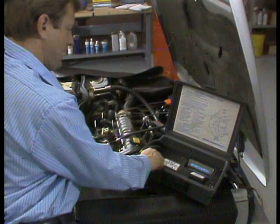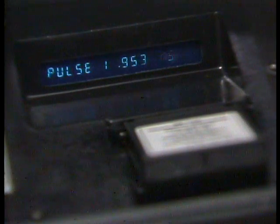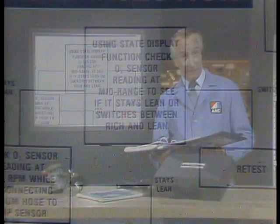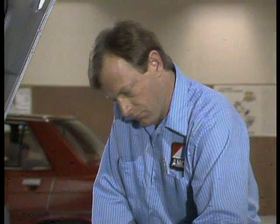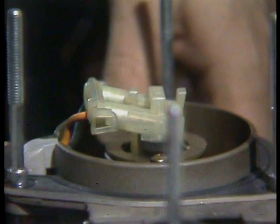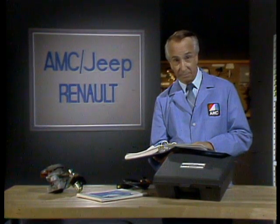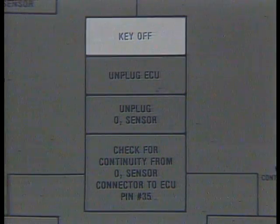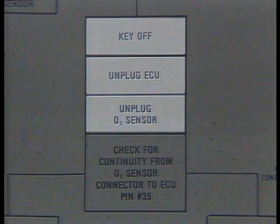To use state display, simply advance the tester by pushing the Y switch until you reach the type of display you want. A few of the displays available include air temp, map sensor, barometric pressure, TCS for closed throttle switch, WOT, and about a dozen others. Back to the O2 sensor — the tester manual says to check it at mid-range throttle to see if it stays lean or switches between rich and lean at about 2,000 RPM. It stays lean. The tester manual says to next check the O2 sensor reading while disconnecting the vacuum hose from the map sensor. It's still lean.